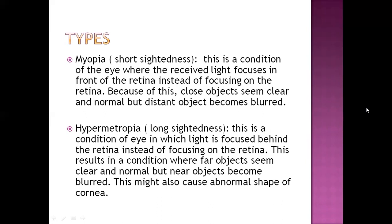Next is hypermetropia, called long-sightedness. In this condition, light is focused behind the retina instead of being focused on the retina. Because the light is focused behind, far objects seem clear but near objects seem blurred. This may also cause abnormal shape of the cornea in the long term.